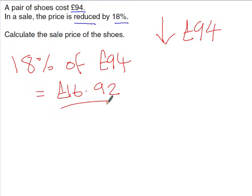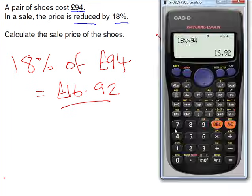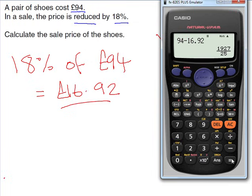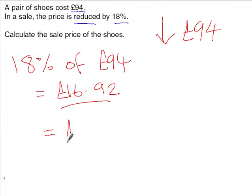Don't stop at £16.92 — that's just the amount taken off, not the sale price. If it's a two or three mark question, there will be multiple steps. Take 16.92 away from the original 94 pounds. Press SD — the new price of the shoes is £77.08.